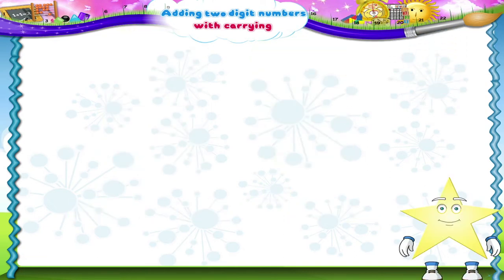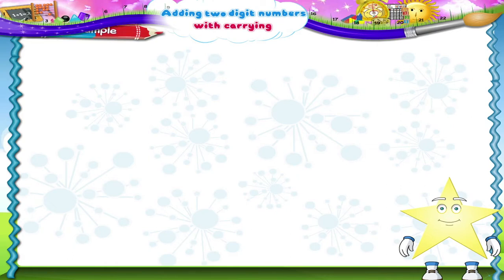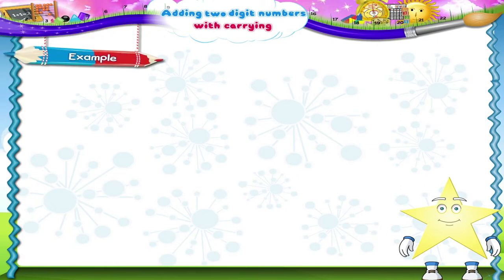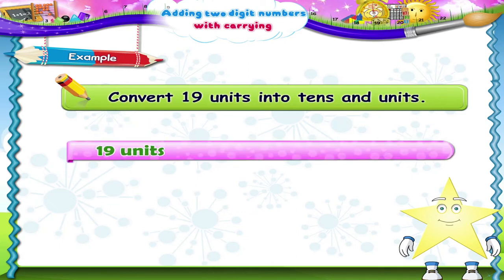So Starry, when there are more than ten objects of the same type, they can be converted to a group of tens. For example, convert nineteen units into tens and units. Nineteen units will be equal to one ten and nine units.